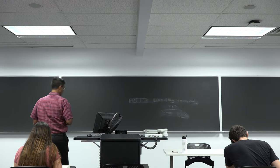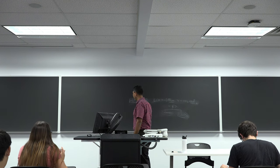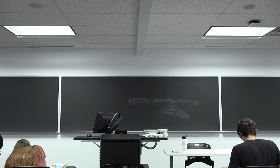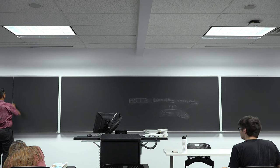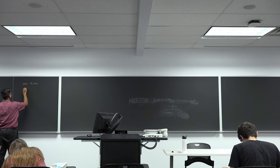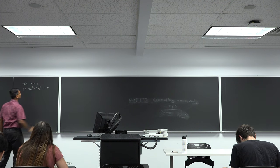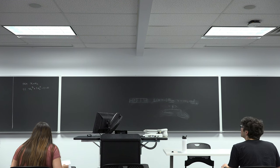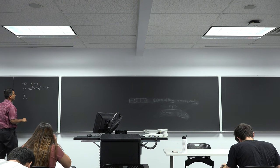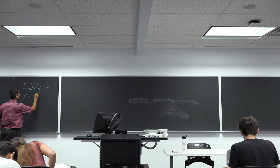We are talking about the necessary conditions for optimality in the constrained optimization case. In the previous lecture, we had one specific example: minimize x1 plus x2 subject to a constraint. We found that λ* was equal to plus or minus square root of 3 over 2.